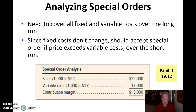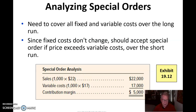Special orders — we get those all the time. We need to cover all our fixed and variable costs over the long run, but since fixed costs are not going to change, we should accept special orders if the price exceeds the variable costs over the short run. That's an important concept. If I sell this for $22 a unit and my variable costs are $17 a unit, that results in a contribution margin of $5 per unit. Under a fully absorbed basis, that $17 would have been $25, giving the impression we're not making money on that order. The key is that fixed costs don't change in total.